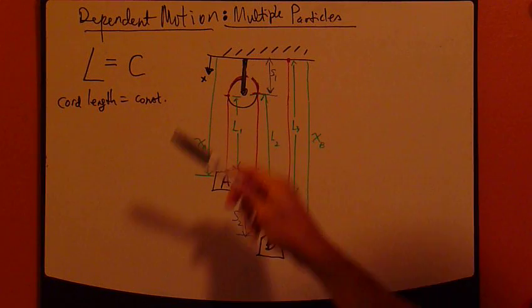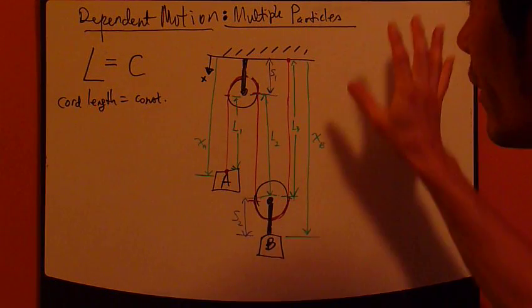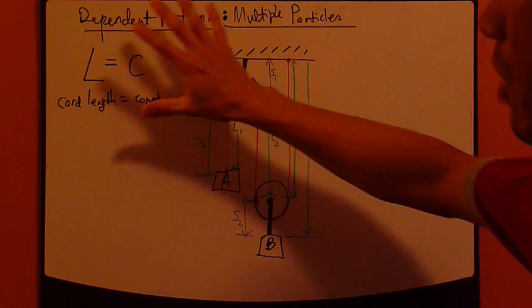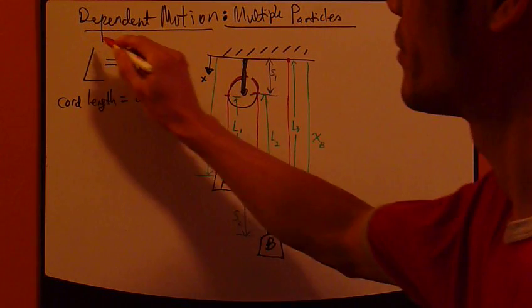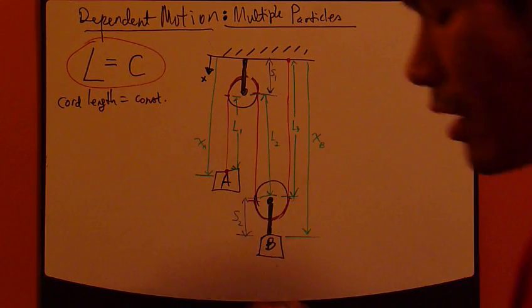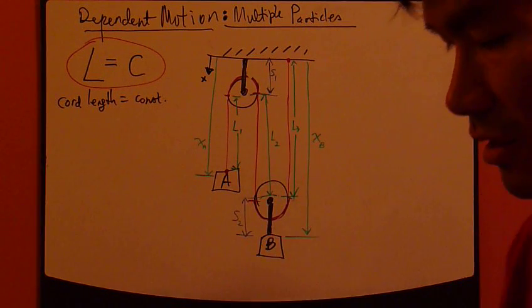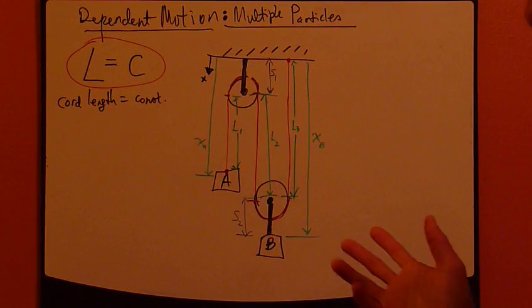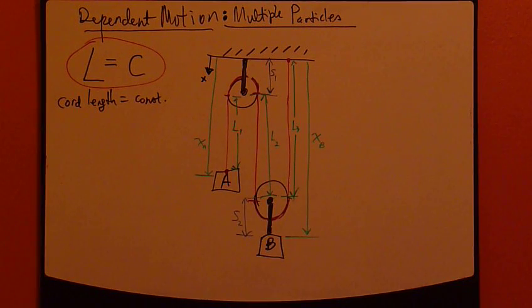Let's consider this case. Now, the only equation they need to know as far as this multiple particle dependent motion is concerned is this right here. L is chord length, which is the length of the string attaching the particle. C is this constant. So, chord length equals constant.